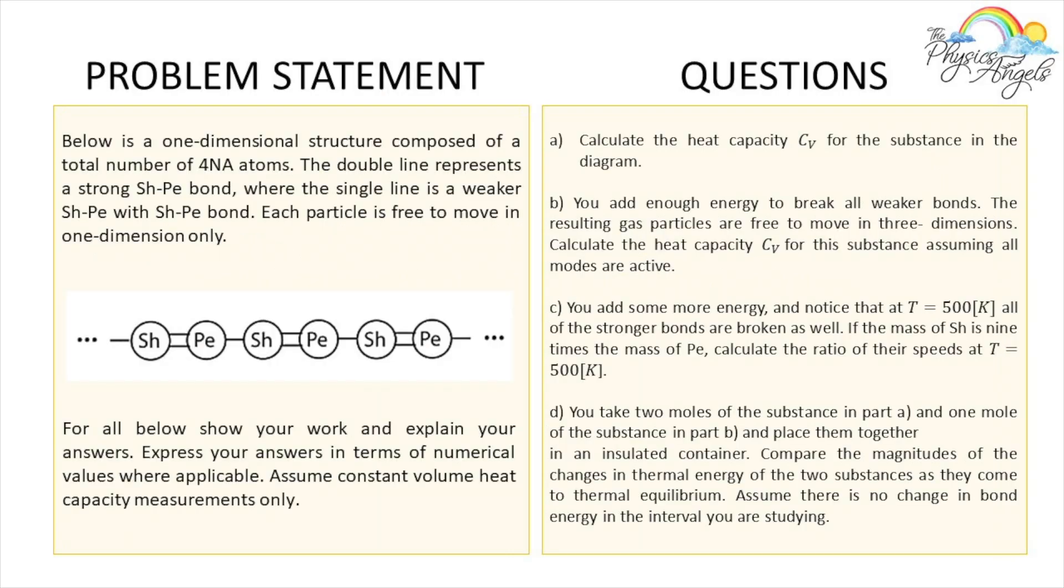So this is the problem that we're going to be working on today. Below is a one-dimensional structure composed of a total number of four N_A atoms. The double line represents a strong Sh-Pe bond, where the single line is a weaker Sh-Pe bond. Each particle is free to move in one dimension only. For all below, show your work and explain your answers. Express your answers in terms of numerical values where applicable. Assume constant volume heat capacity measurements only.